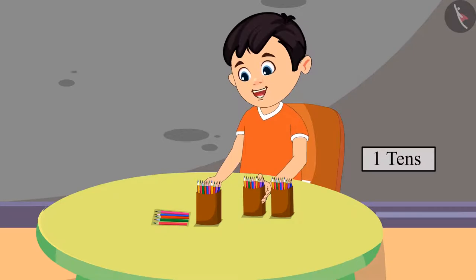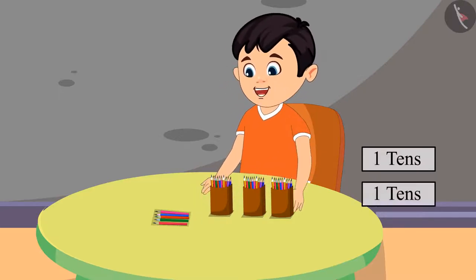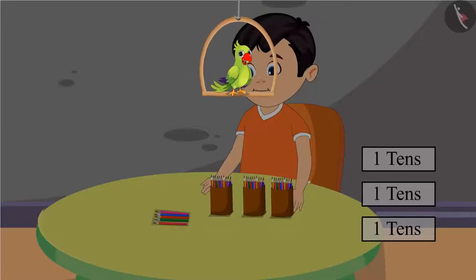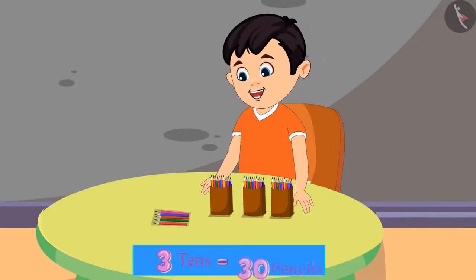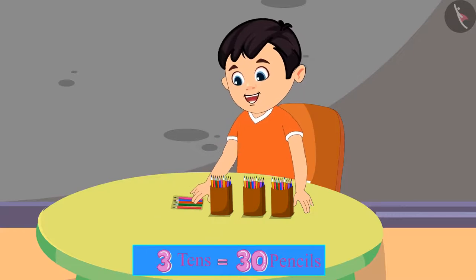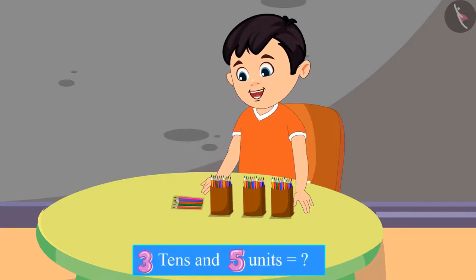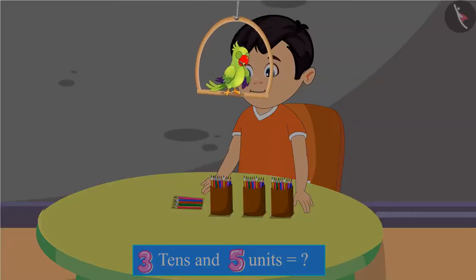Then Chotu took another pencil box containing 10 more pencils, meaning 1 more ten. After that, another pencil box containing 10 pencils, which means 1 more ten. So children, can you tell me how many pencils Chotu has? He has 3 groups of 10 pencils, which means 3 tens, that is 30 pencils. And here are his 5 old pencils — 30 pencils with 5 more units.